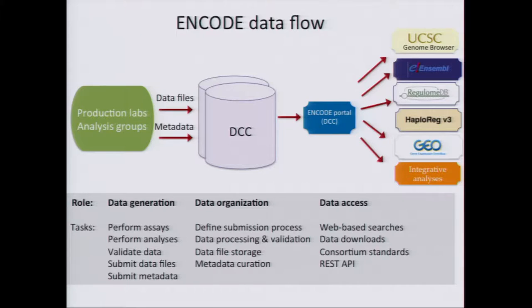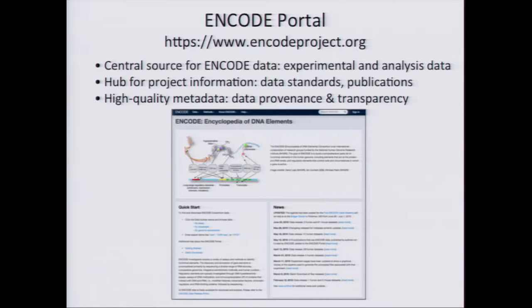The ENCODE portal is the central source for the ENCODE data — the primary experimental data and the consortium-generated analysis data. It's also a hub for project information: data standards, publications, and the pipelines that are run. One of our main goals is to provide high-quality metadata, and I hope to show you why this is important and why having high-quality metadata can help you find the data that you want.